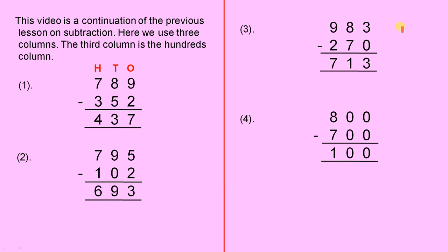983 minus 270. 3 take away 0 is 3, 8 take away 7 is 1, 9 take away 2 is 7, 713.